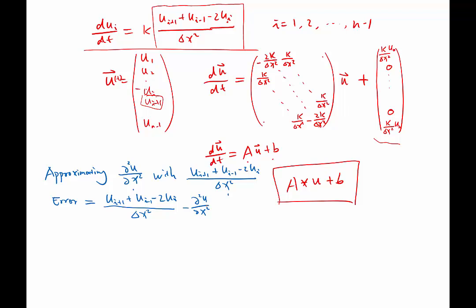And one of the very powerful ways to analyze the accuracy of an approximation scheme is Taylor series. Taylor series expands the solution at a particular point as a function of the values and derivatives of the same function at a different point.